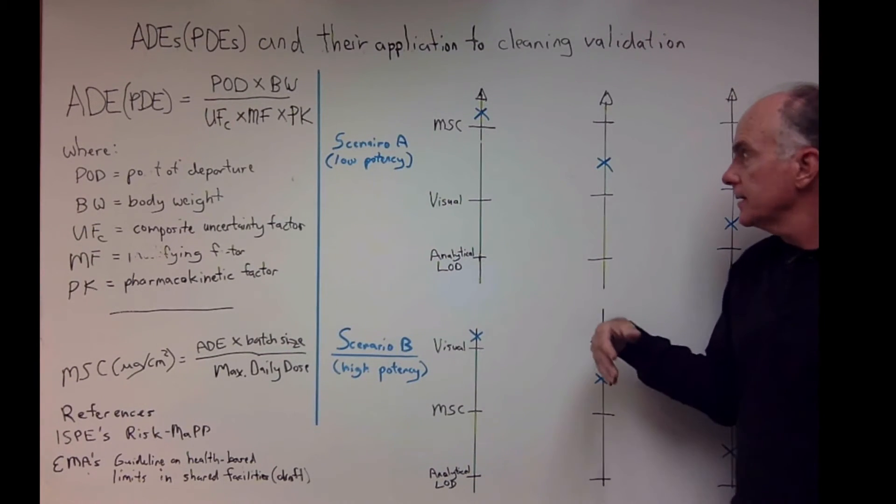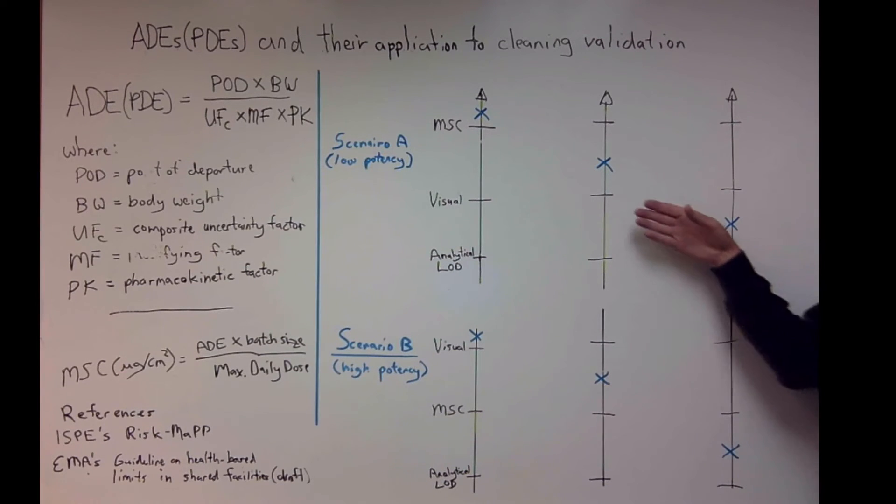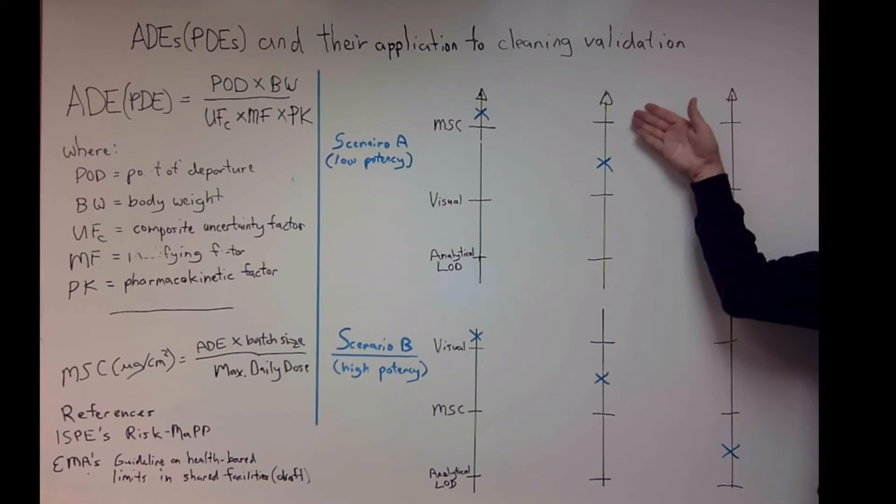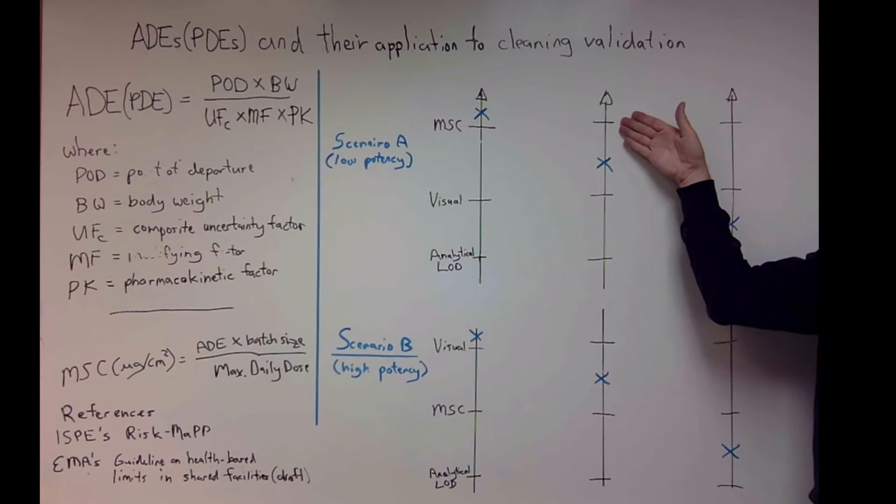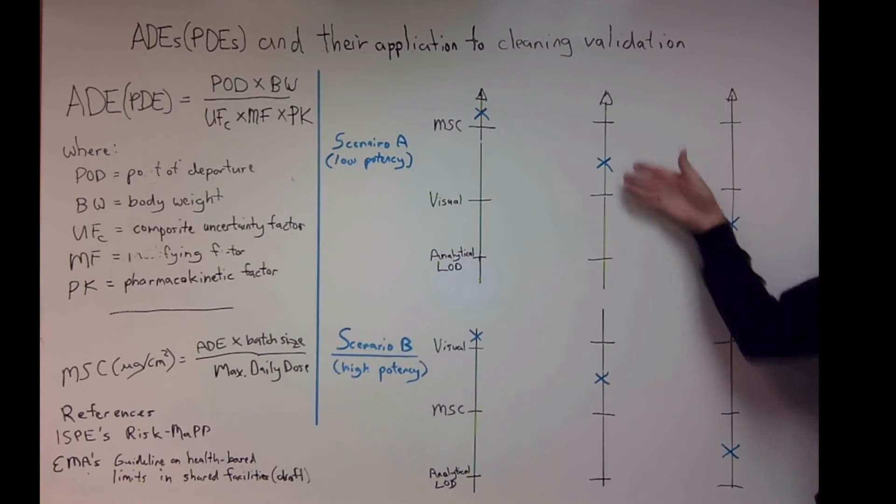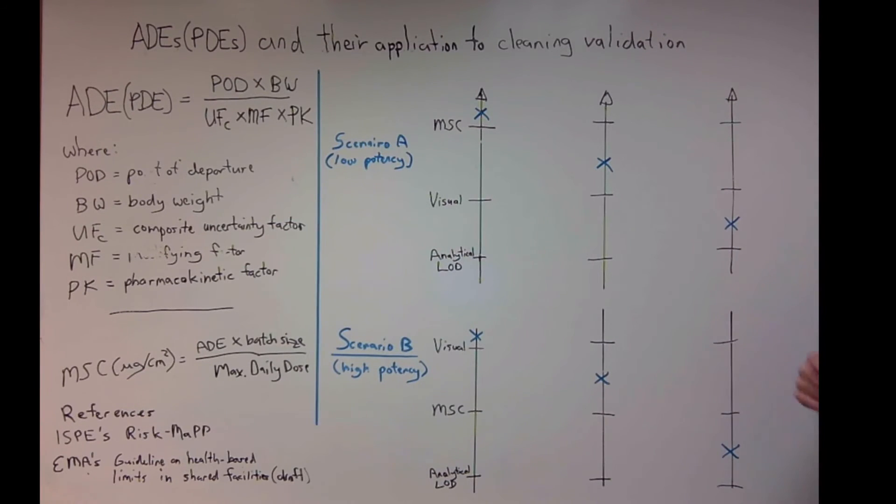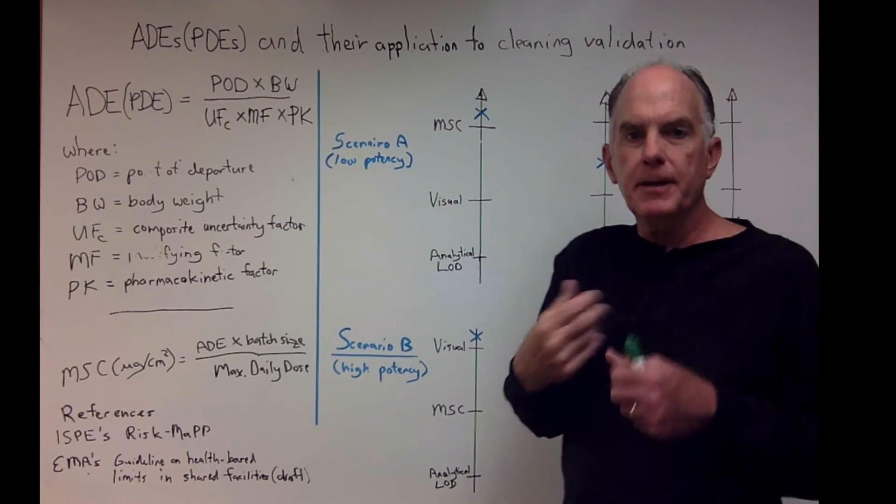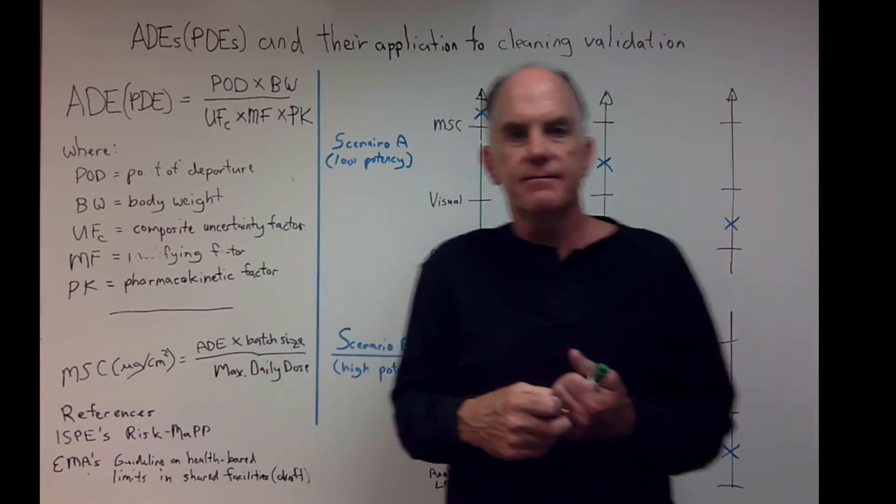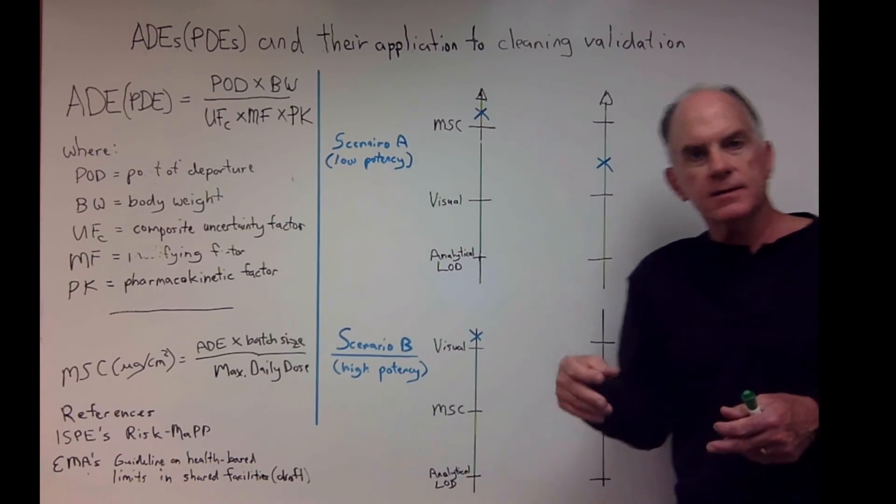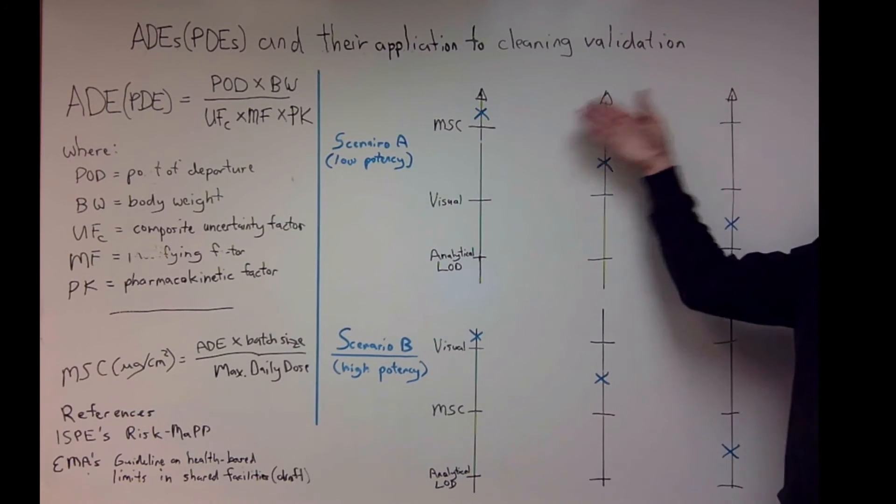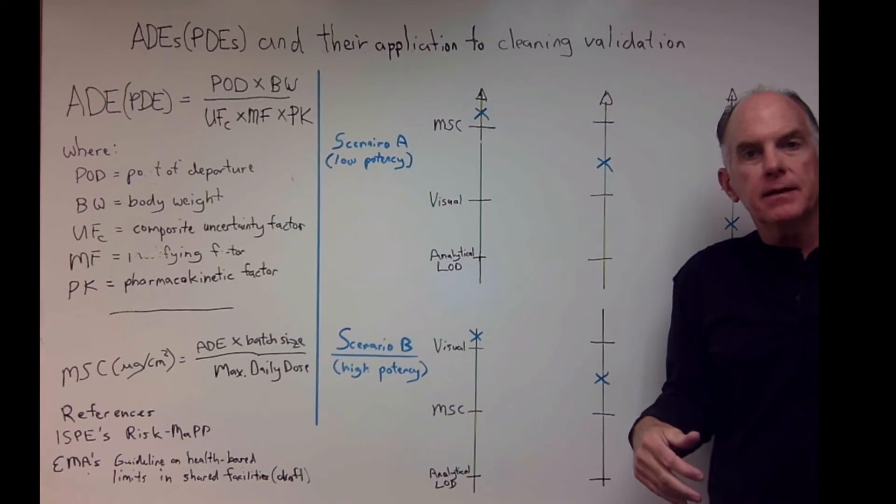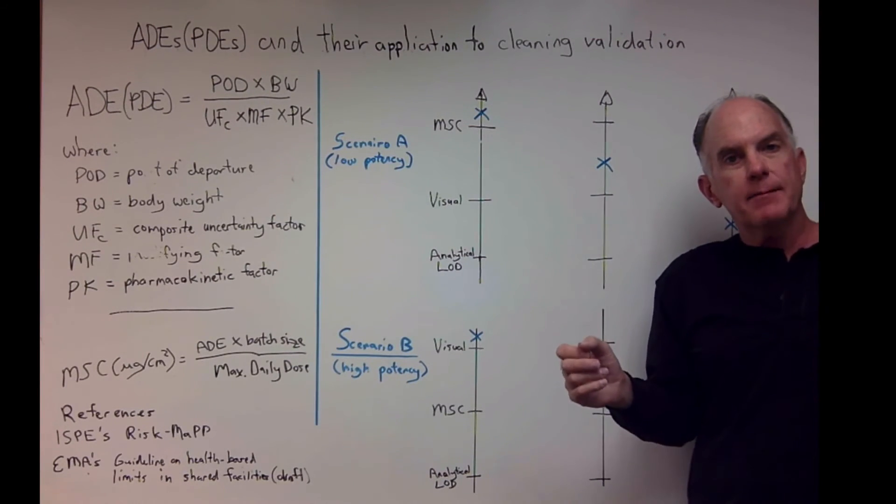The next scenario is where you're below your maximum safe carryover but you're above the visual. So this means while it is safe, you can still see contamination. And this is a point where people often get confused in cleaning validation. Regardless of what your MSC comes up to be, if you see contamination you have to clean it, no matter what this MSC number comes up to be.